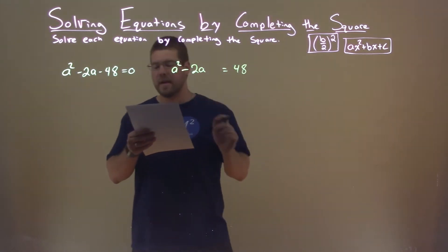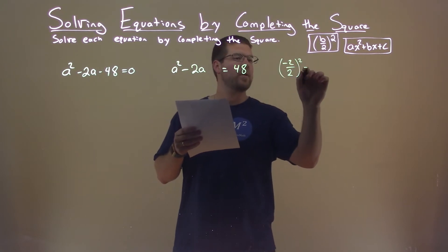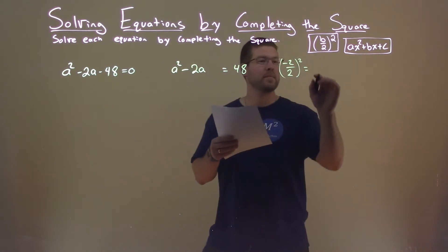Now look at my b value, negative 2. I take this negative 2, I'm going to divide it by 2, and I'm going to square it. What does that come out to be? Well, it's just a positive 1.